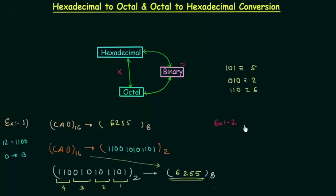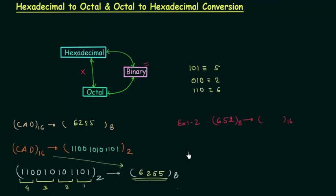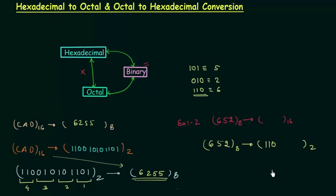Example number 2: we want to convert octal number 652 to hexadecimal. We will reverse the process — first converting the octal number to binary. For octal to binary conversion we write the 3-bit equivalent binary number for each digit: 6 is written as 110, 5 is written as 101, and 2 is written as 010. So we have converted octal 652 to binary 110101010.